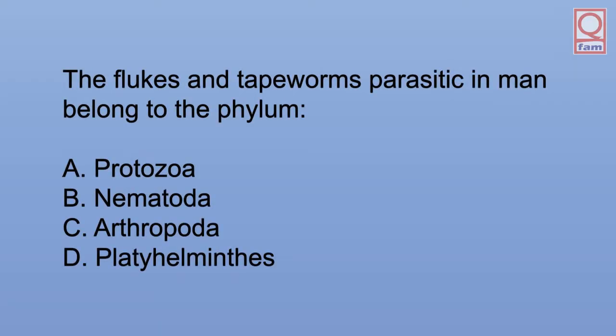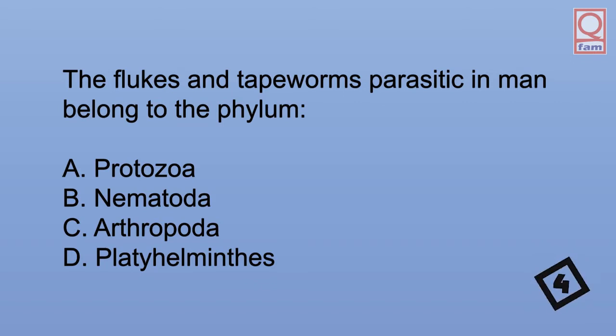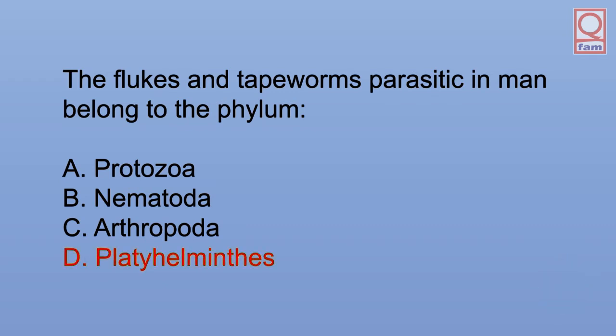The flukes and tapeworms parasitic in man belong to the phylum. A. Protozoa. B. Nematoda. C. Arthropoda. D. Platyhelminthes. The answer is D. Platyhelminthes.